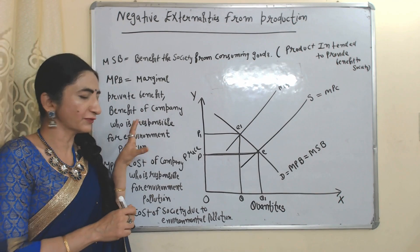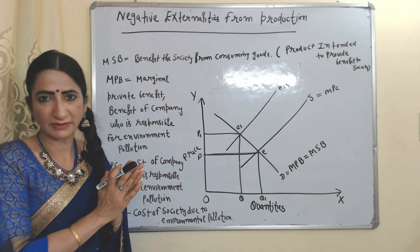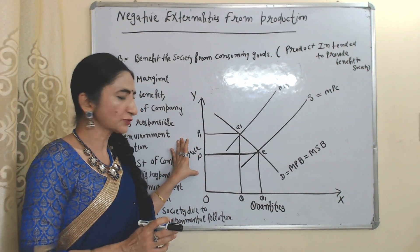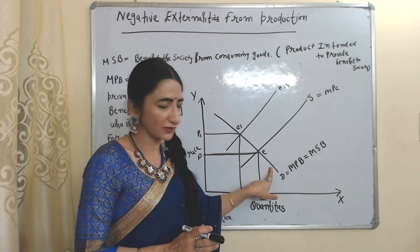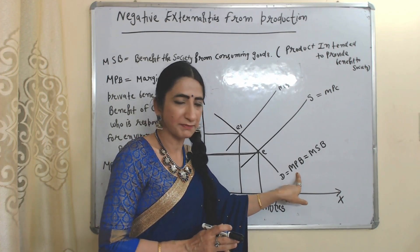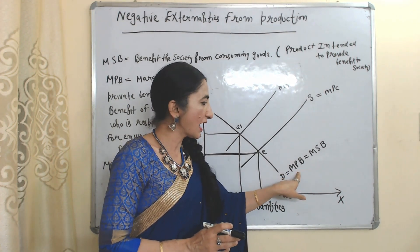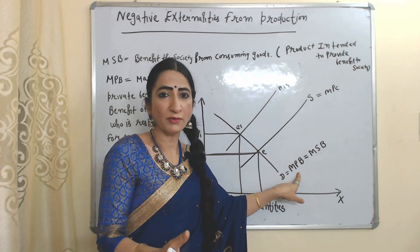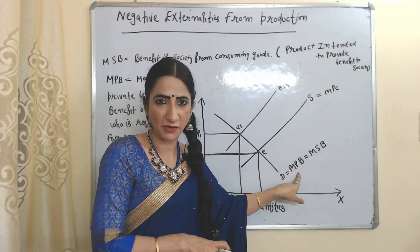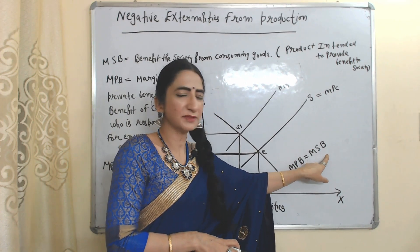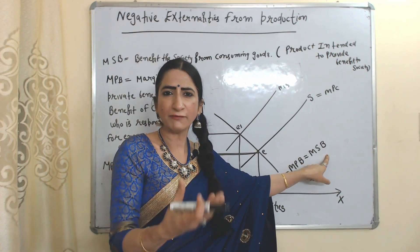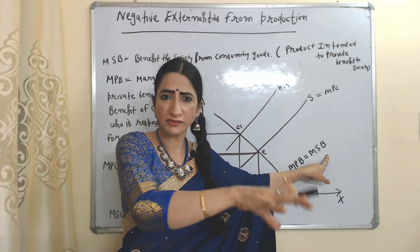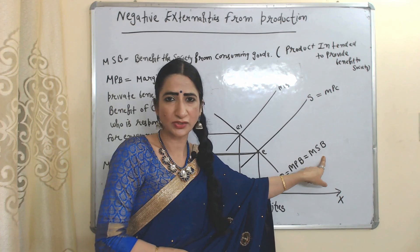Now with the help of this diagram we will clearly understand negative externalities. On the x-axis we have quantities, on the y-axis we have price. DD is the demand curve, which is equal to MPB and MSB. MPB means marginal private benefit — the benefit of the firm responsible for environmental pollution. MSB means marginal social benefit — the benefit a product gives to society.